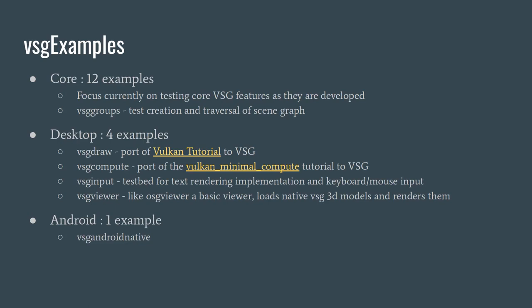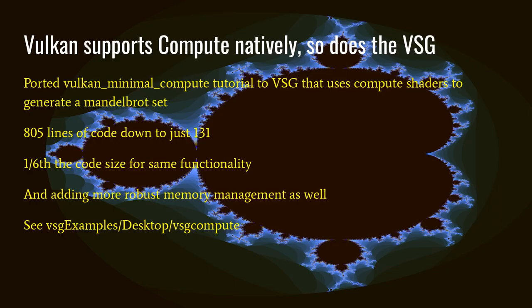The VSG examples project has 12 examples in the core associated with non-graphics functionality, plus some desktop ones with graphics, and an Android example. The core examples test core VSG functionality — I write an example as I write each feature. The vsg_groups example demonstrates the performance benchmarks I described. On the desktop side we have a vsg_draw, vsg_compute, a vsg_input testbed for text rendering and keyboard/mouse input, and a vsg_viewer equivalent to osgviewer — a basic viewer that loads native VSG 3D models and renders them.